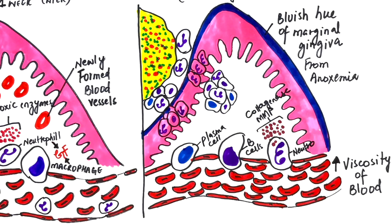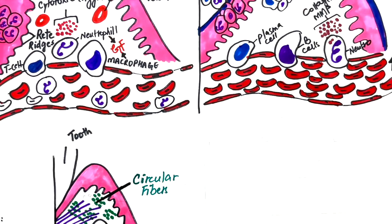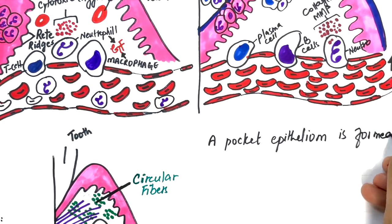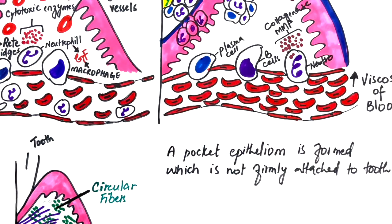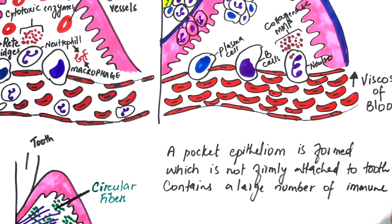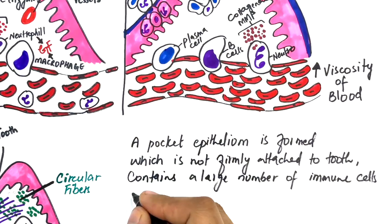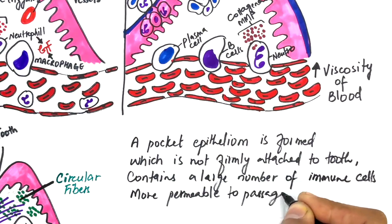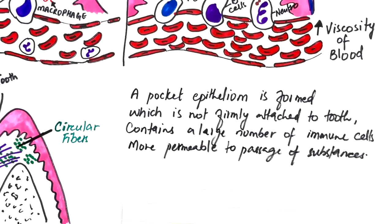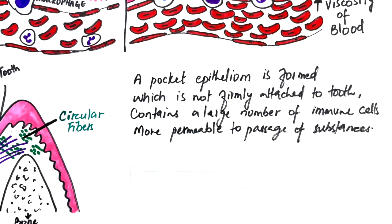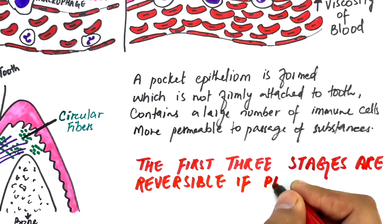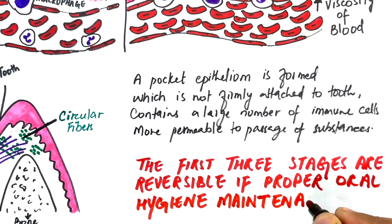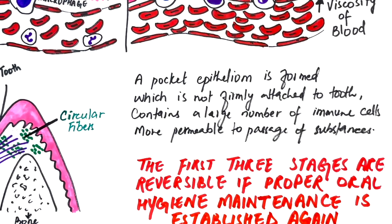The destruction of gingival collagen fibers and intense accumulation of immune cells within the junctional and circular epithelium forms a pocket epithelium that is not firmly attached to the tooth surface, that contains a large number of immune cells, and that is more permeable to the passage of substances into or out of the underlying connective tissue. Remember that all these three stages of gingivitis we have just mentioned are totally reversible if proper oral hygiene maintenance is established again.